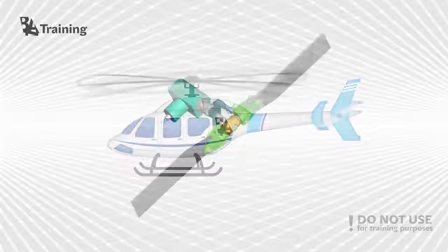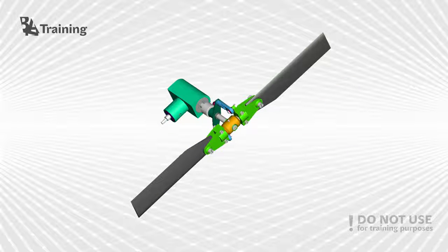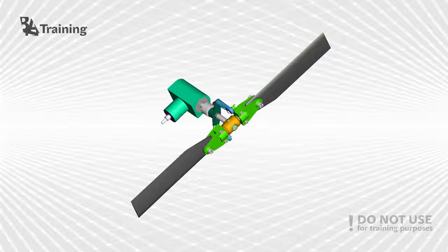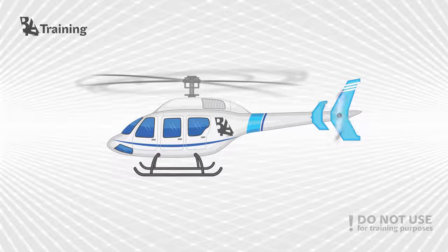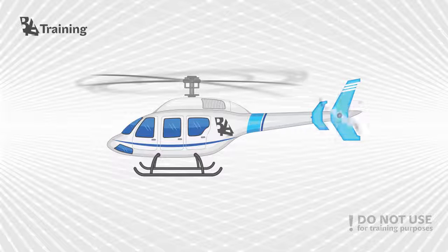Tail rotor: the tail rotor is a smaller rotor mounted so that it rotates vertically or near vertically at the end of the tail of a traditional single rotor helicopter. The tail rotor's position and distance from the center of gravity allows it to develop thrust in a direction opposite of the main rotor's rotation to counter the torque effect created by the main rotor. Tail rotors are simpler than the main rotors since they require only collective changes in pitch to vary thrust. The pitch of the tail rotor blades is adjustable by the pilot via the anti-torque pedals, which also provide directional control by allowing the pilot to rotate the helicopter around its vertical axis, thereby changing the direction the craft is pointed at.